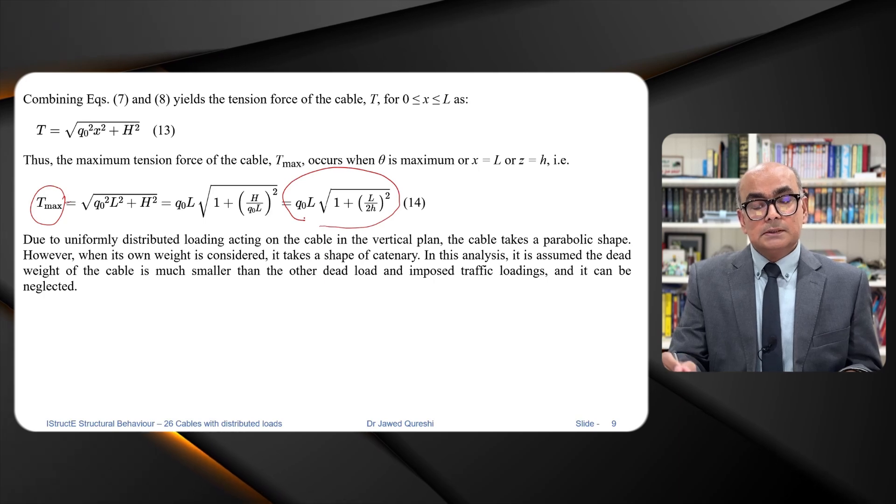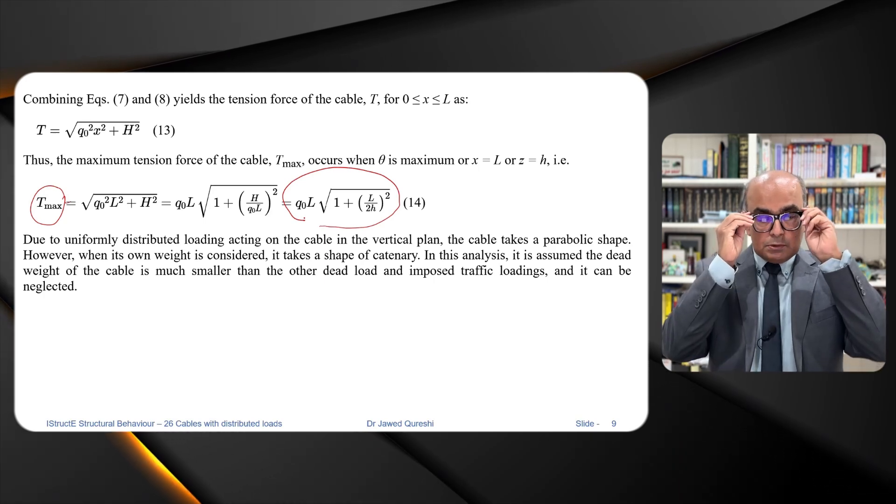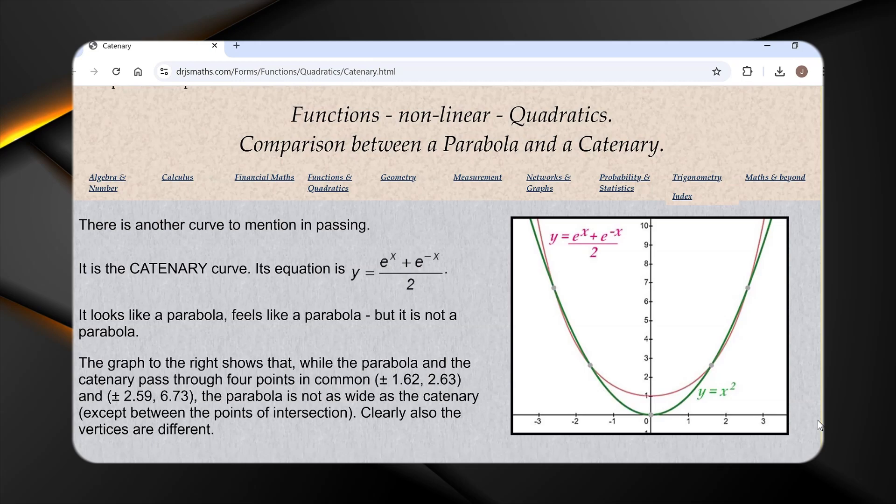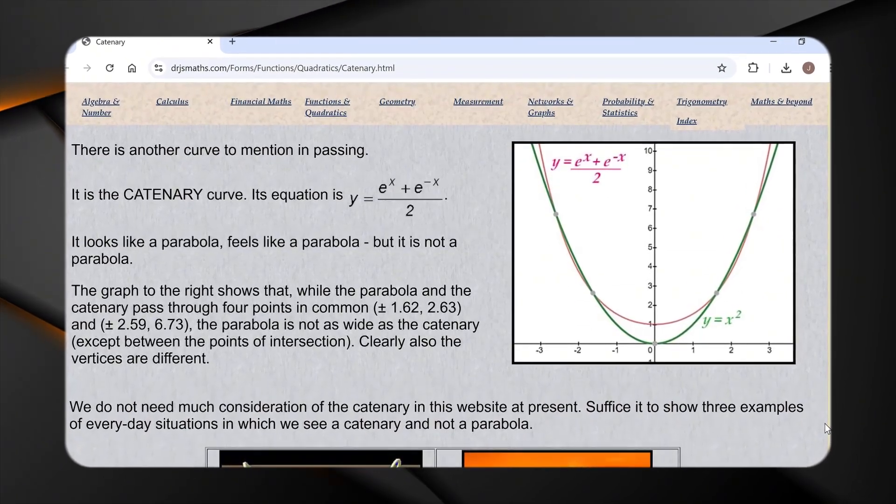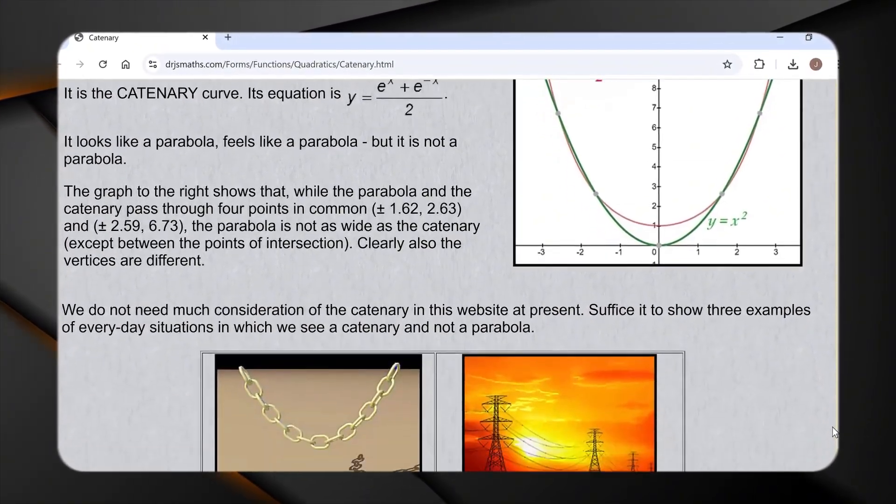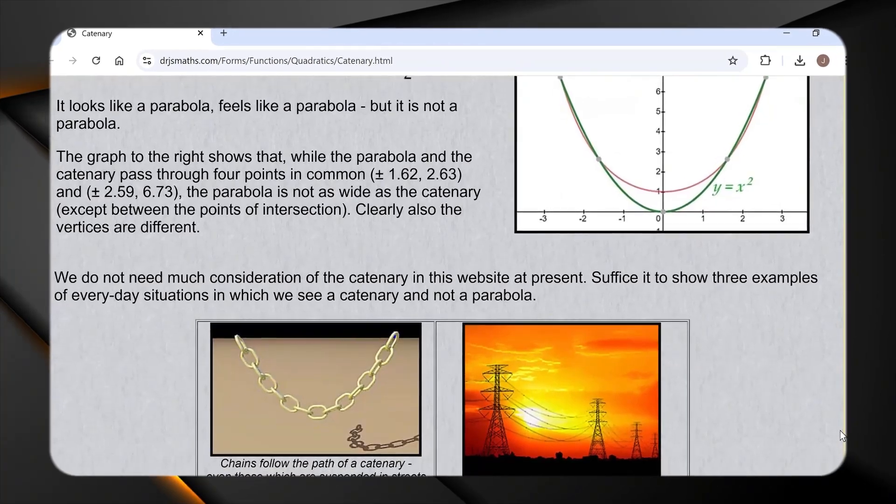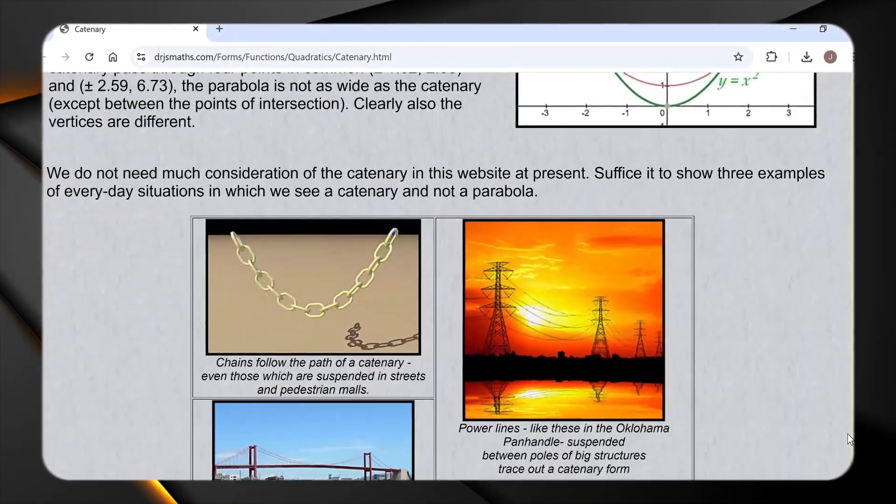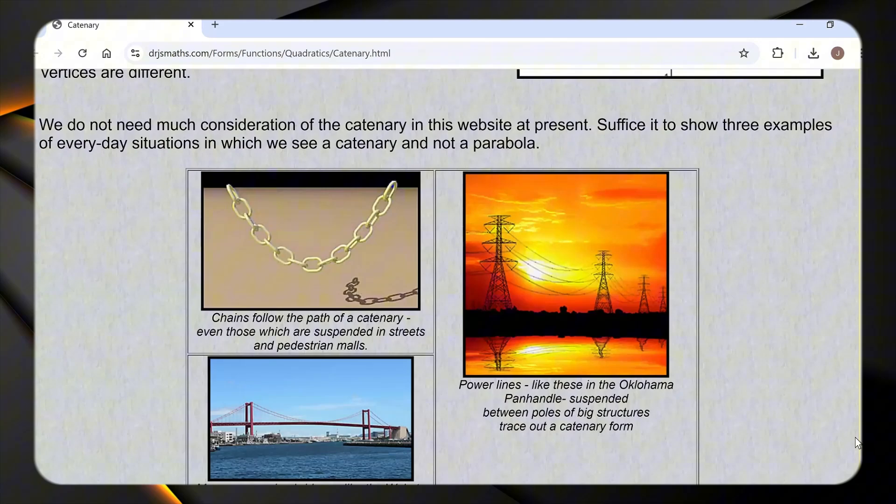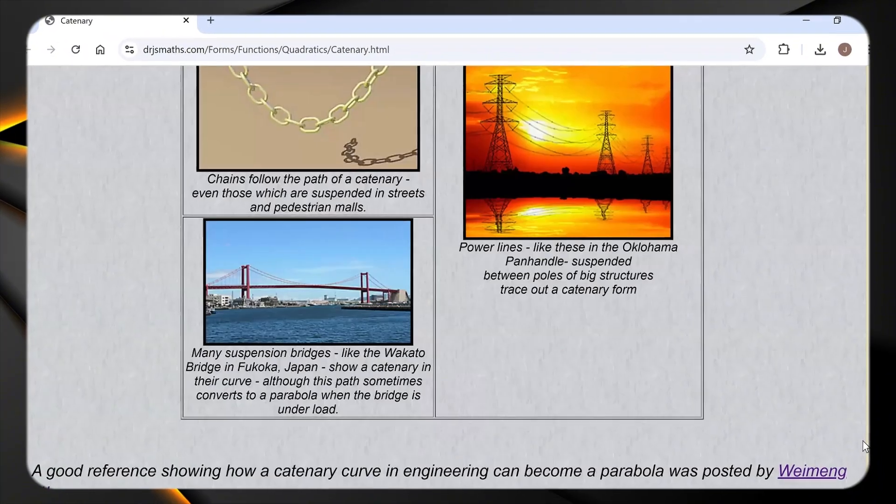It must be remembered that due to uniformly distributed loading acting on the cable, the cables, they take the shape of parabola. However, under its own self weight, it has shape of catenary.